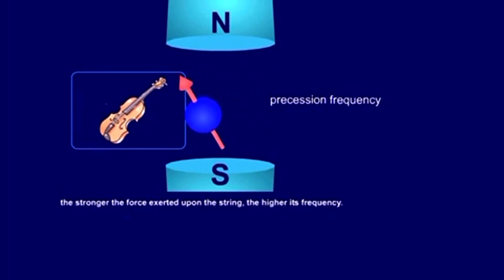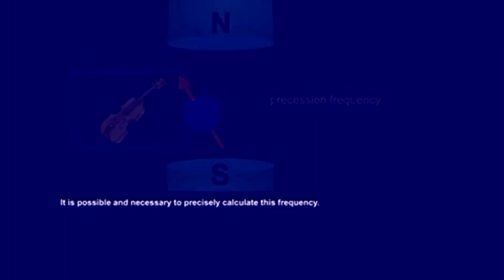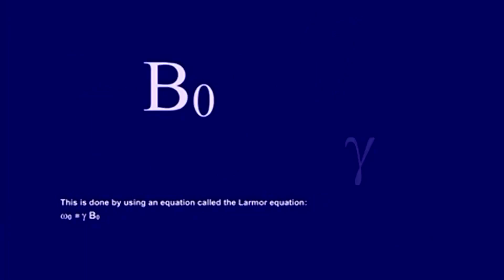It is possible and necessary to precisely calculate this frequency. This is done by using an equation called the Larmor equation: omega zero equals gamma B zero.